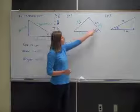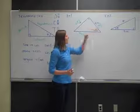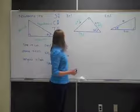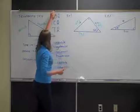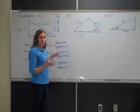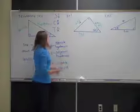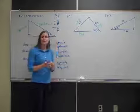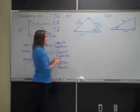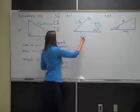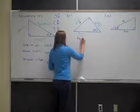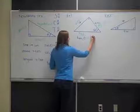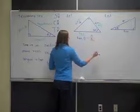I know the adjacent side and I'm looking for the opposite side. So which trig ratio includes adjacent and opposite? That would be tangent. That's how you know which trig ratio to use. I'll write: tangent of theta equals opposite over adjacent.